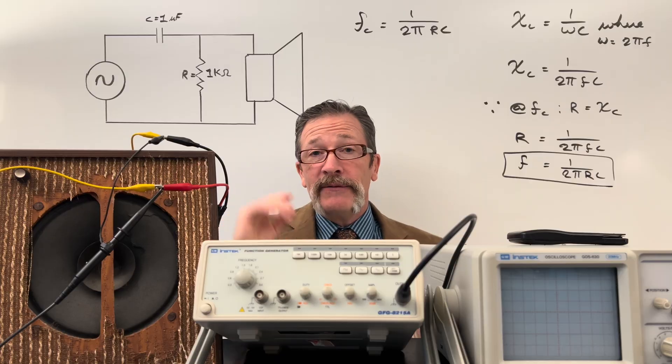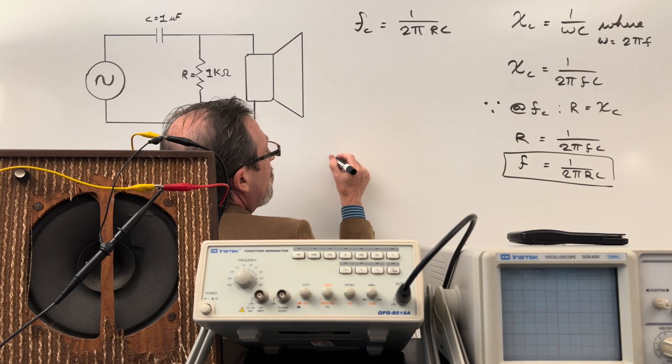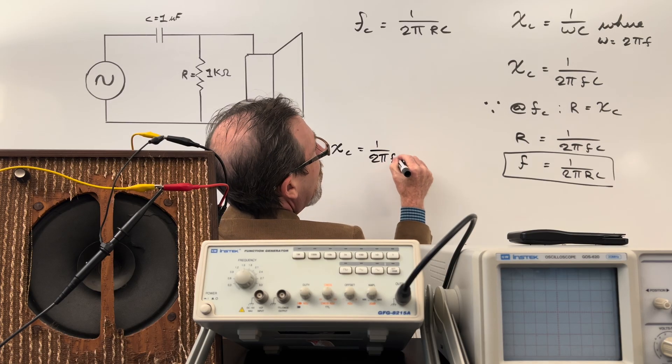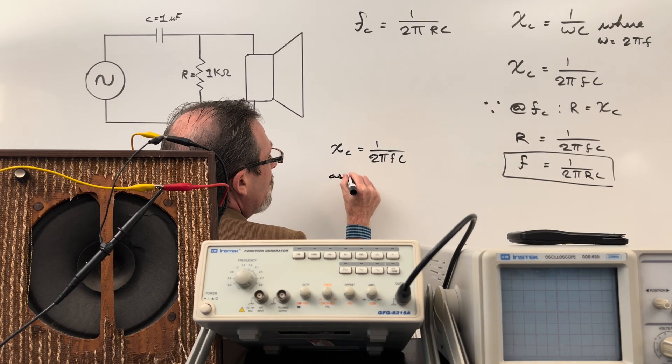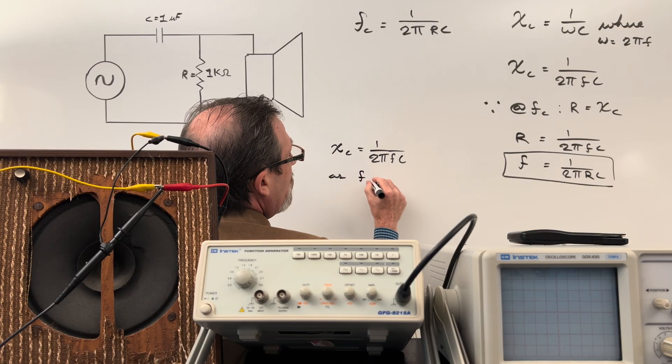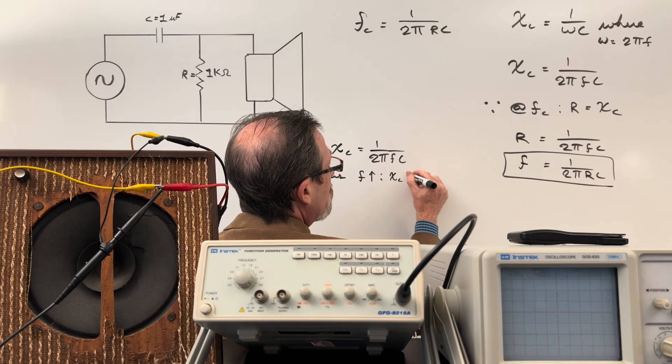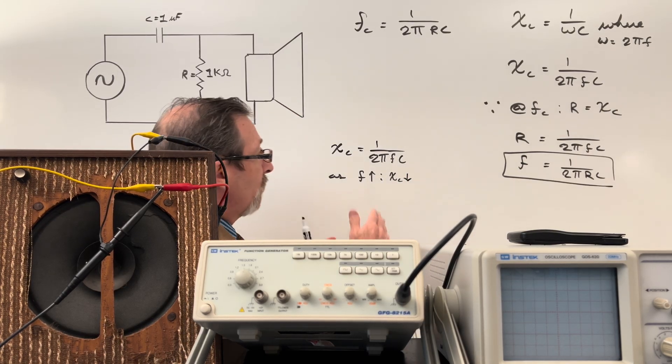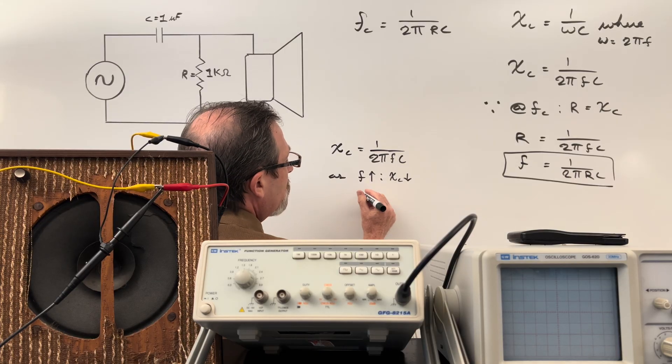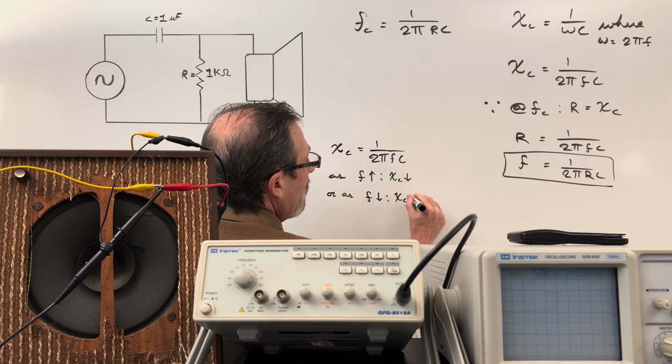It might be easier just to use this formula. If I rewrote capacitive reactance equals 1 over 2πfC, they could start making claims. They could say: as frequency increases, my capacitive reactance - if I put a bigger and bigger number on the bottom, this gets smaller and smaller - would decrease. In other words, higher frequencies have less impedance. Or the opposite: as frequency decreases, capacitive reactance increases.